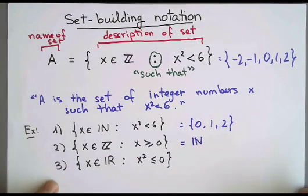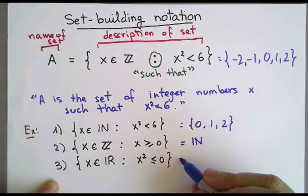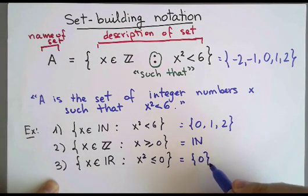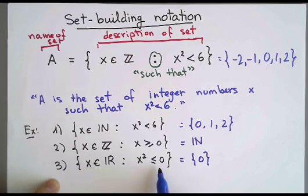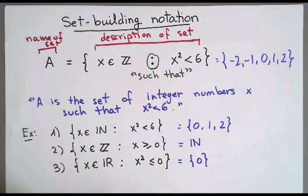And as for the third one, this contains just one element. This is the set 0, because any other real number will have a square that's positive. So there is nothing else.